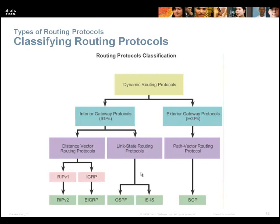Routing protocols come in two flavors: interior gateway and exterior gateway. Interior gateway typically means inside a company or building; exterior means the internet. The internet uses BGP for routing — if it had to use EIGRP or OSPF exclusively, routing tables would be enormous. We'll get into BGP in another class. For now, we focus on interior gateway routing protocols — the ones used inside a company.